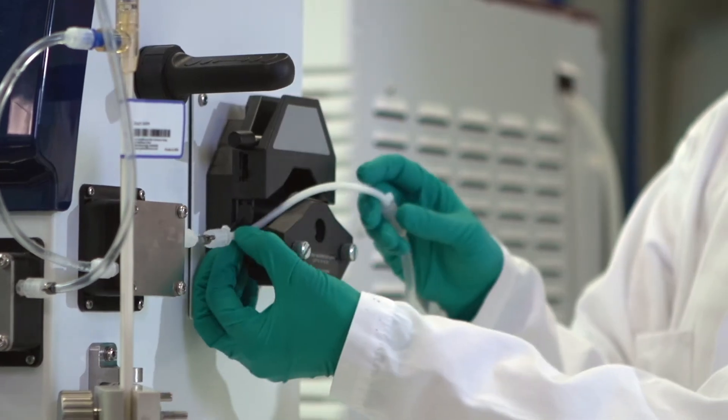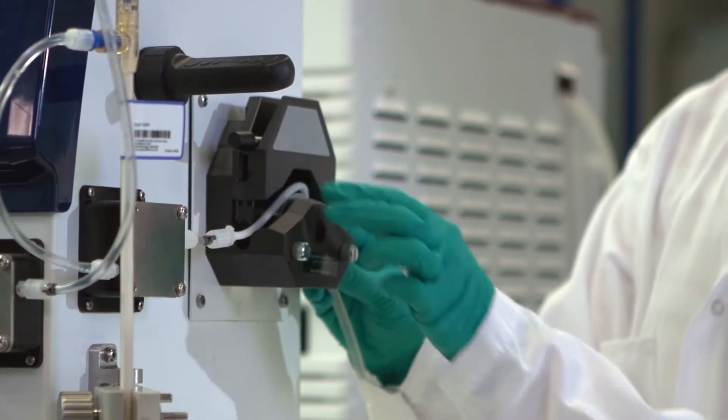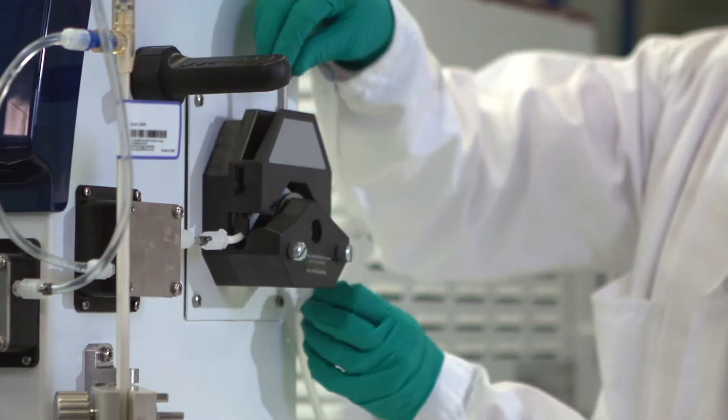To enable a stable flow and to prevent early fouling of the filter, a permeate control pump can be used.